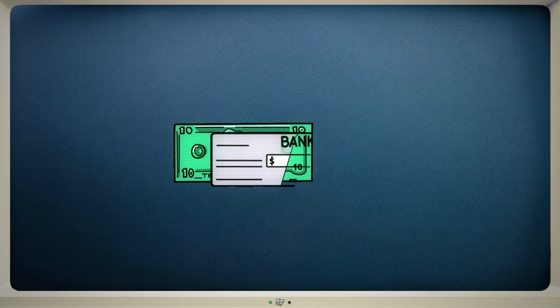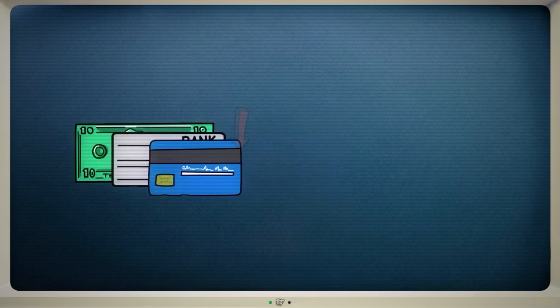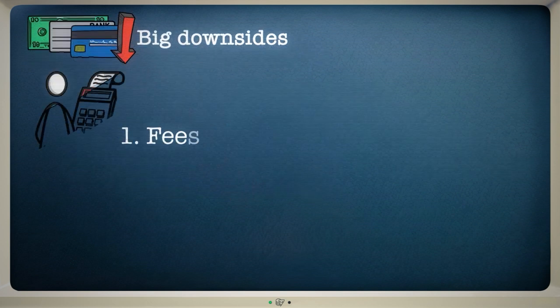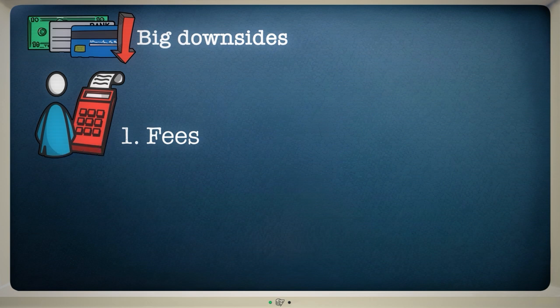Cash, checks and credit cards all dominated the world's economy for years, but they all have big downsides. First, you've got to go through a middleman, and they make payments more expensive for everyone because of their fees.